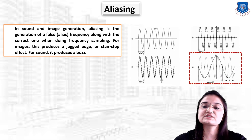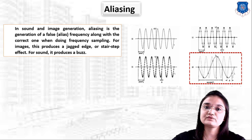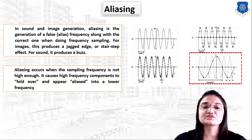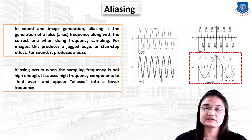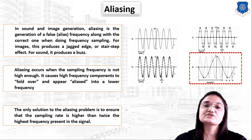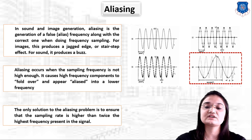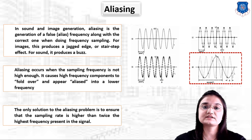You can clearly see in the figure: the original signal versus what happens during frequency sampling — the generation of false frequencies produces a buzz and jagged edge effect. Aliasing occurs when the sampling frequency is not high enough, causing high frequency components to fold over and appear aliased into a lower frequency. The only solution to the aliasing problem is to ensure that the sampling rate is higher than twice the highest frequency present in the signal.